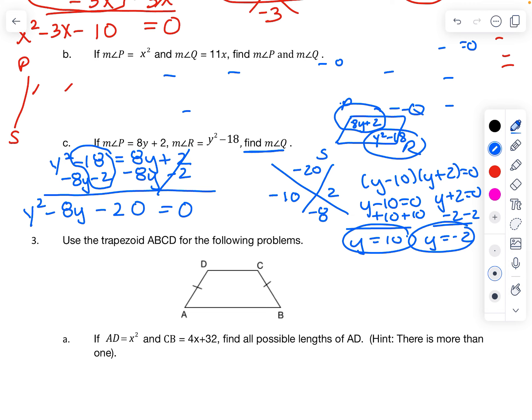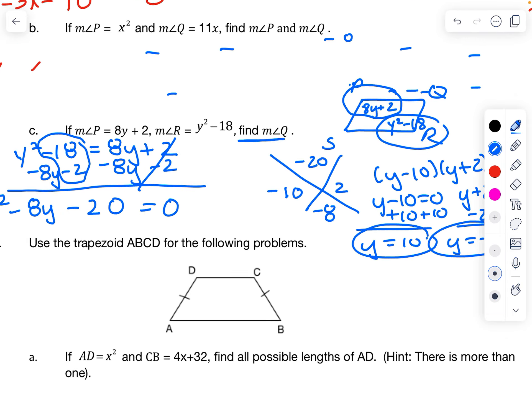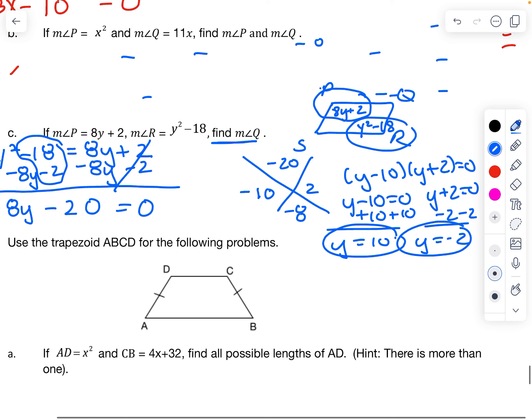But notice what the question is asking. Find the measure of angle Q. But the problem did not give us the measure of angle Q. So notice, this is what it's asking, but I don't have this angle. So what you can do is you can plug in the numbers into any of the other angles. It doesn't matter.